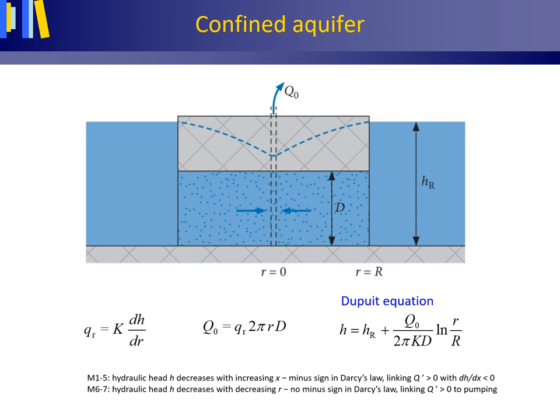In the steady groundwater flow cases M1 to M5, the hydraulic head H decreases with increasing positive x in the direction of flow, linking a positive volume flux with a negative hydraulic gradient, which is why a minus sign is present in Darcy's law. However, in this radial symmetric case, H decreases with decreasing r in the direction of flow. As water is pumped upward in a positive z direction, it is preferred to assign a positive sign to Q0. Because both Q0 and the hydraulic gradient are then positive in the direction of flow, the minus sign must be dropped in this radial symmetric version of Darcy's law.